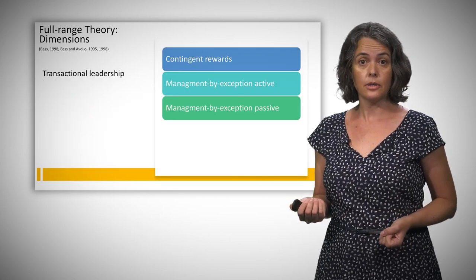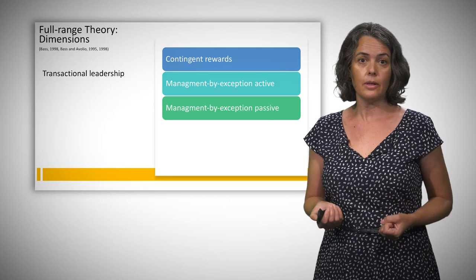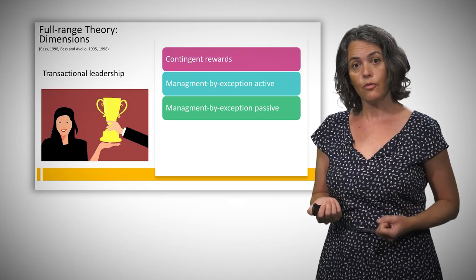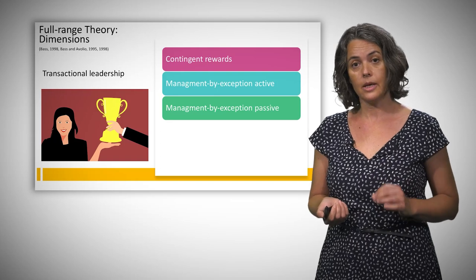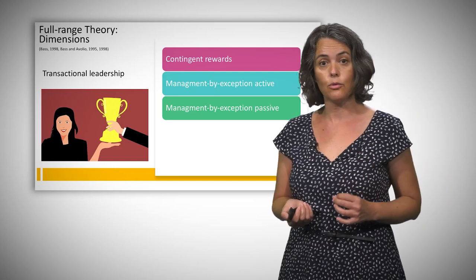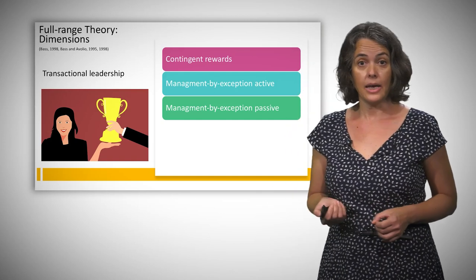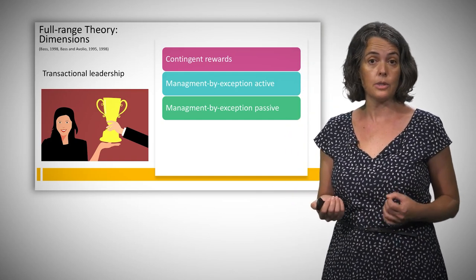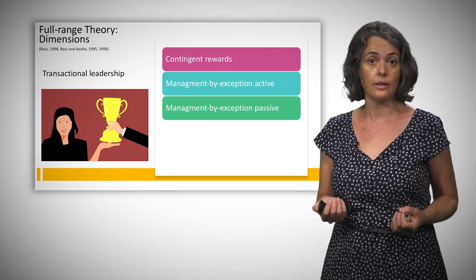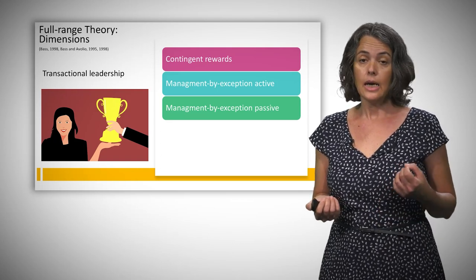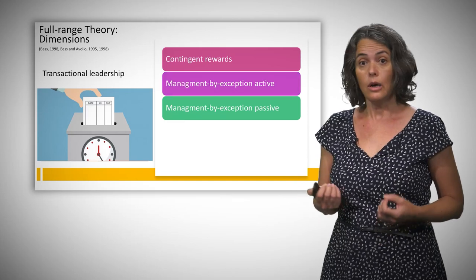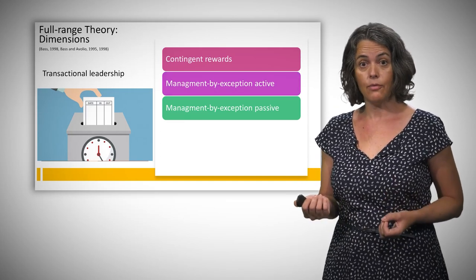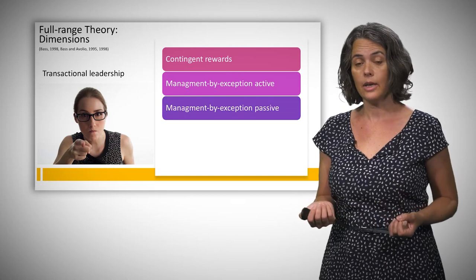Transactional leadership in turn comprises three dimensions. First, contingent rewards consist of clarifying the role requirements and rewarding the behaviors that lead to the expected outcomes. Management by exception refers to corrective actions when deviations from the norms or expected behaviors are detected by the leaders. It is considered active when leaders monitor the exceptions in a planned way, and passive when leaders wait until deviations occur.